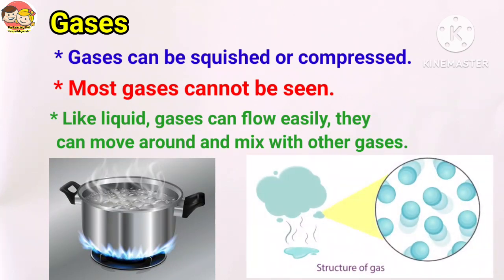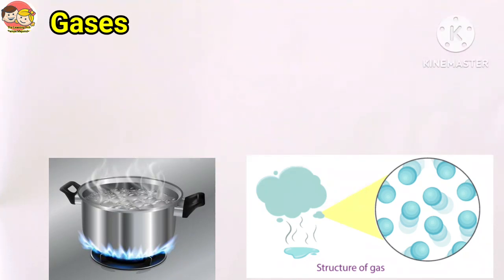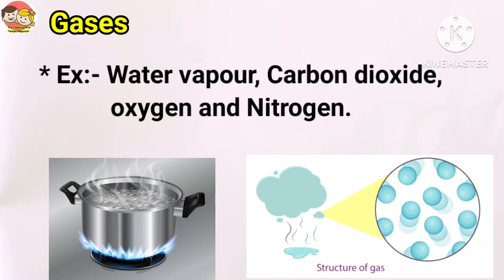In the gaseous state, the particles are very far away from each other. They are not closely packed like solids. That is why gas can flow easily. Examples of gases are water vapor, carbon dioxide, oxygen and nitrogen.